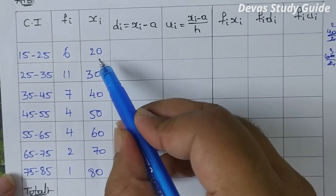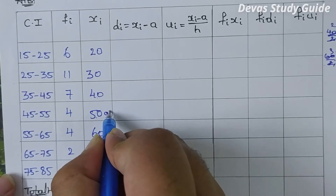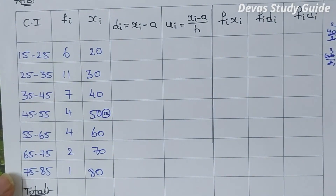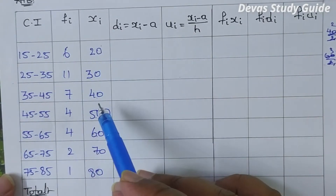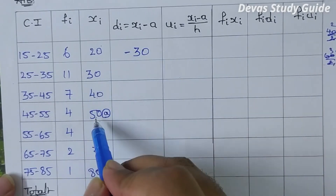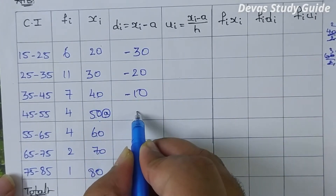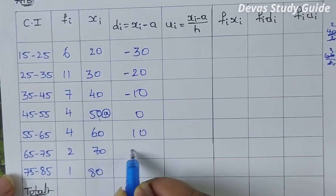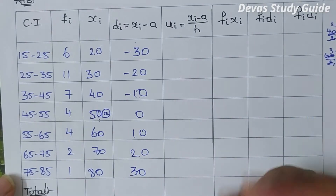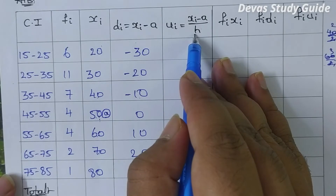A is the assumed mean, A equals 50. This is the middle term. Deviation: 20 minus 50 is minus 30; 30 minus 50 is minus 20. That's the deviation column. Now table 3 — U equals (xi minus A).